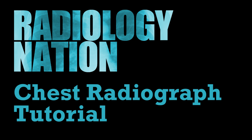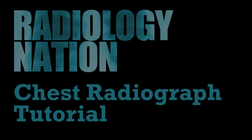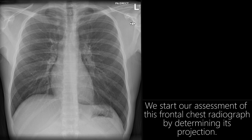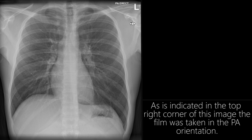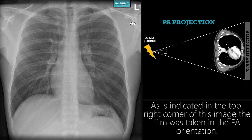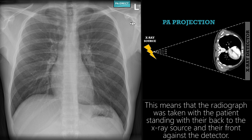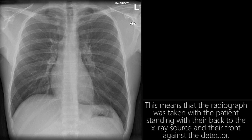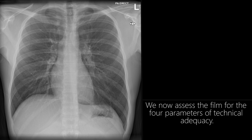Welcome to this tutorial on chest radiograph interpretation. We start our assessment of this frontal chest radiograph by determining its projection. As indicated in the top right corner of this image, the film was taken in the PA orientation. This means the radiograph was taken with the patient standing with their back to the x-ray source and their front against the detector. We now assess the film for the four parameters of technical adequacy.